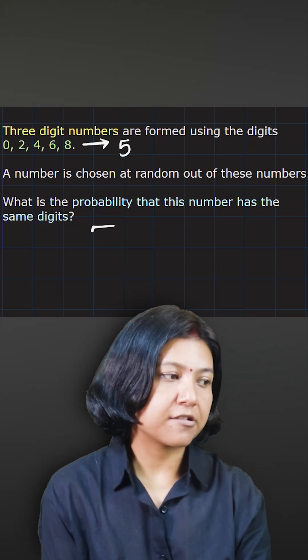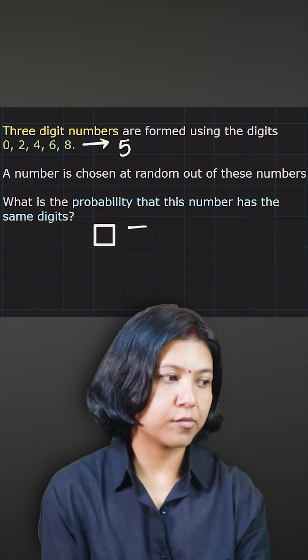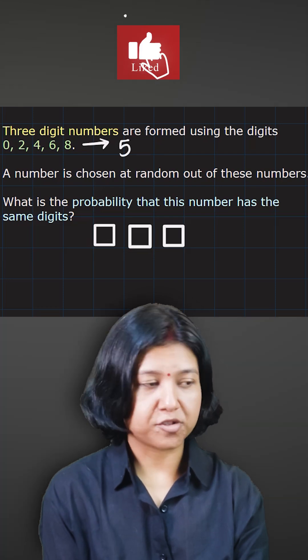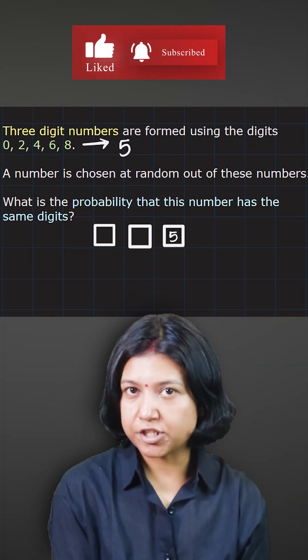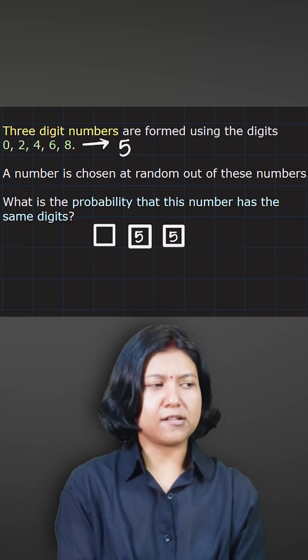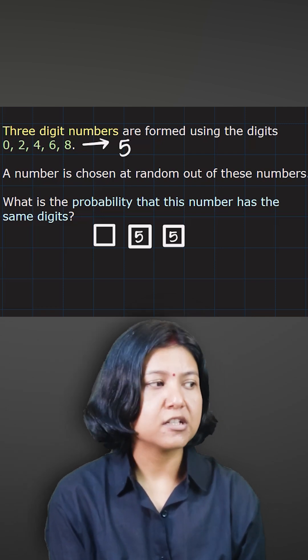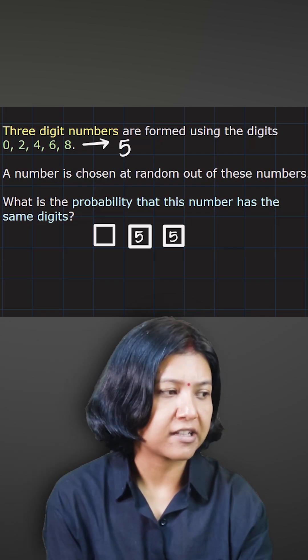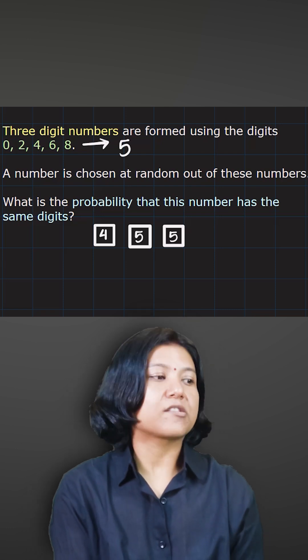Note that no digit begins with zero. So you have five options for filling up the unit digit. You have the same five digits filling up the second place, the tenth place digit, while you have only four digits that can fill up the hundred place.